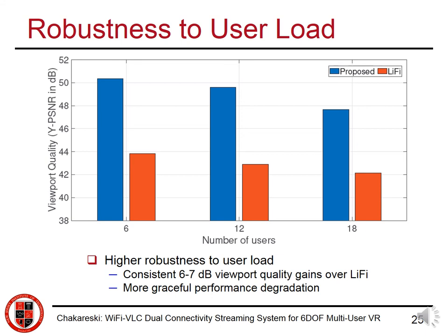As the number of users increases in the system, both our system and LiFi experience degradation in quality, which is expected. In LiFi, there will be more instances where multiple users reside in the same cell and the resources for a single LED transmitter must be split across them. Similarly, in our case, more users are co-located in the same cell and their beams interfere with each other. However, we observe higher robustness to user load, maintaining consistent 6 to 7 dB viewport quality gains over LiFi and providing more graceful performance degradation.